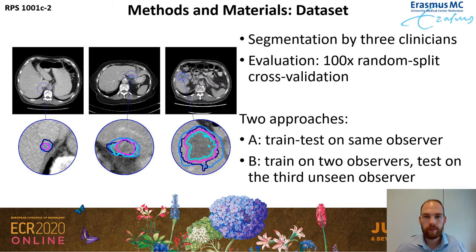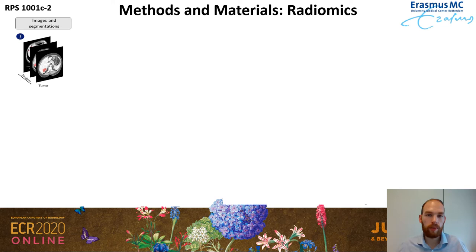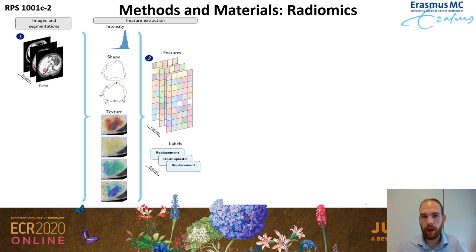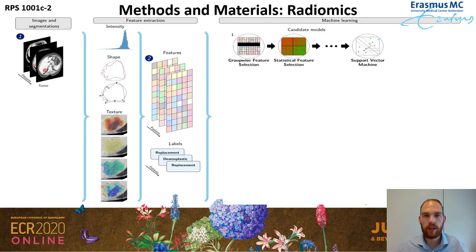Now let's look at the radiomics method we're using. Starting with the images and segmentations, we first extract features from these images. These features give us information about the tumors — for example, simple descriptors such as intensity, like the mean intensity of a tumor, or shape, such as whether it's more lobular, and also more complex features like texture features such as heterogeneity of the tumor. We do this for all patients, ending up with features for each patient, along with the known growth pattern.